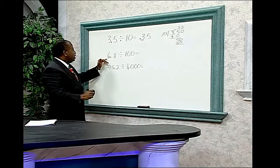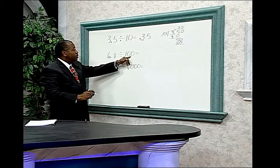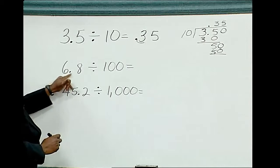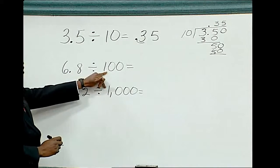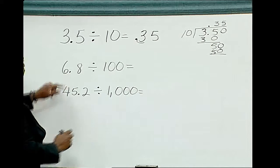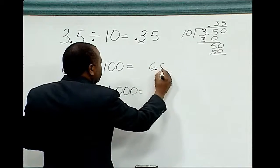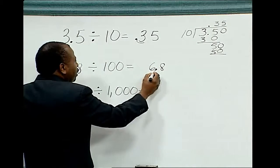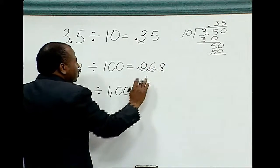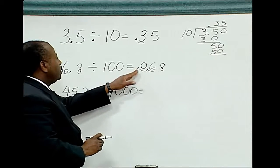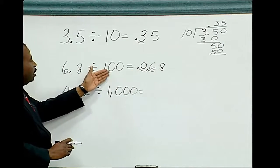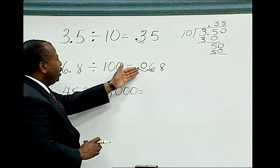Example number two: six point eight divided by one hundred. The one hundred contains two zeros. Therefore, to divide six point eight by one hundred, the short way is to move the decimal point two places to the left. Six point eight — moving the decimal point two places to the left: one, two — add a zero to fill the space in, erase the original point, and the answer is point zero six eight. Therefore, six point eight divided by one hundred equals point zero six eight.